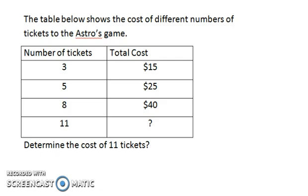The unknown is the total cost for 11 tickets. We must determine the relationship between the number of tickets and the total cost. We know that 3 times 5 equals 15. Let's see if that pattern continues. 5 times 5 equals 25. The pattern continues correctly with 8 times 5 equals 40.